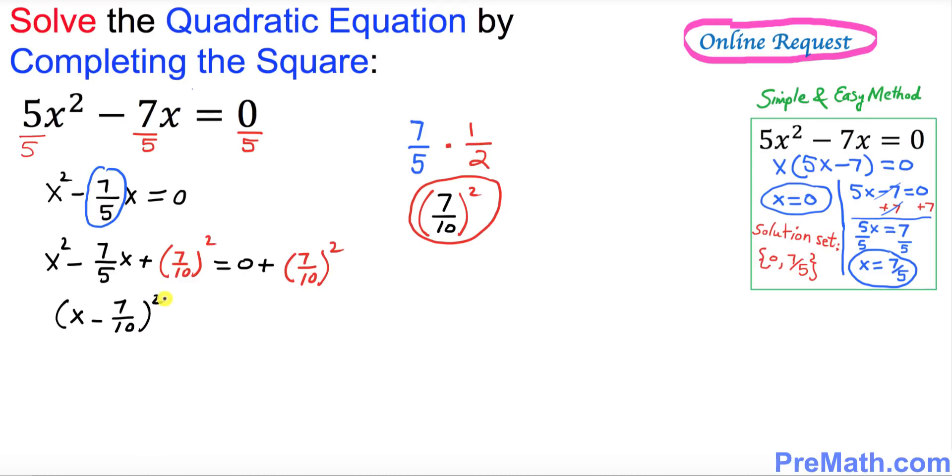Now you might be wondering how did we get that one, so let me just show you. This x showed up right up here. This 7/10 showed up right up here. This negative sign came right up here.